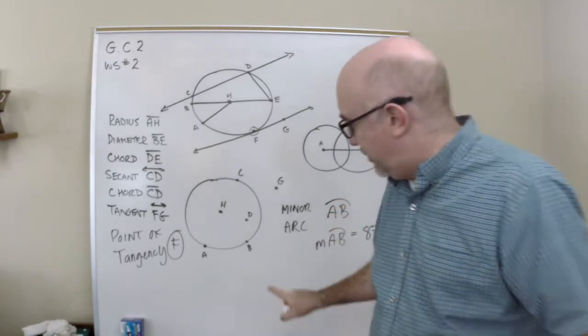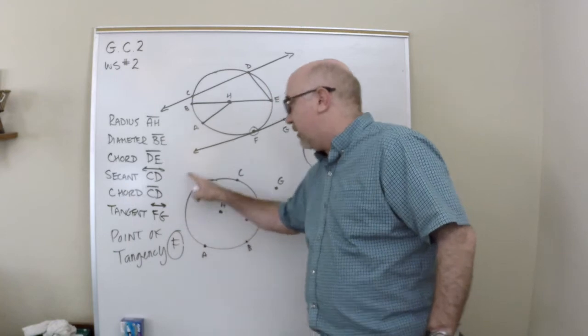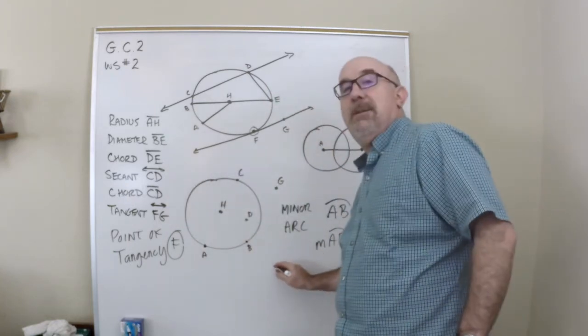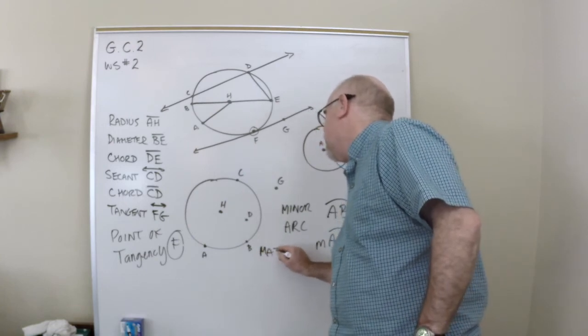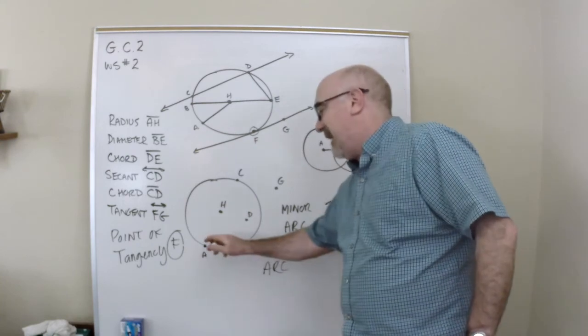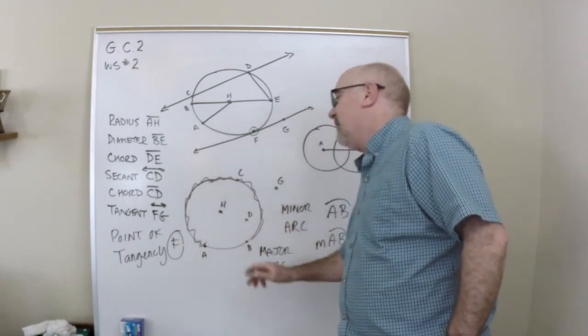Now, a circle is tricky because you don't know, am I going this way from A to B, or am I going the long way to A to B? The long way would be a major arc. Major arc. And it gets its name because it's going the long way around.